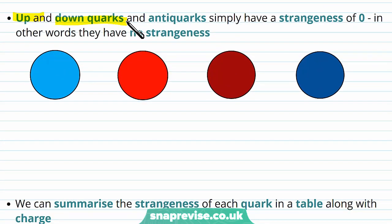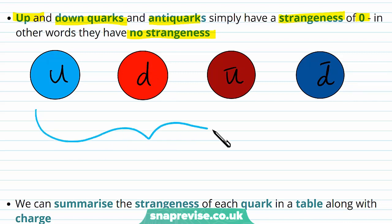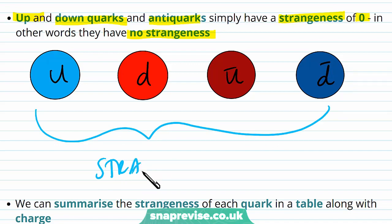Up and down quarks and anti-quarks simply have a strangeness of zero — in other words, they have no strangeness. So for our up, down, anti-up, and anti-down quarks, if we examine their strangeness we find they all have zero strangeness.